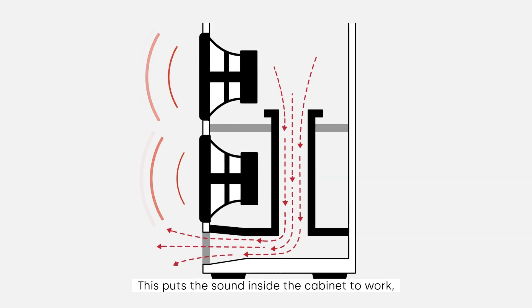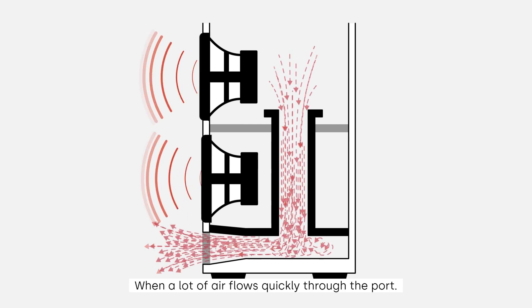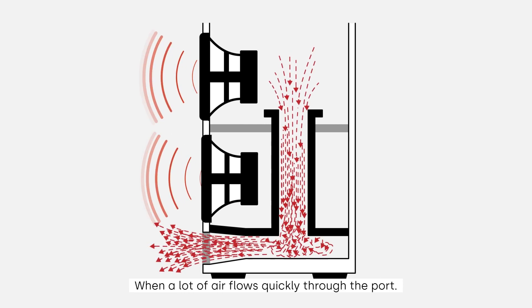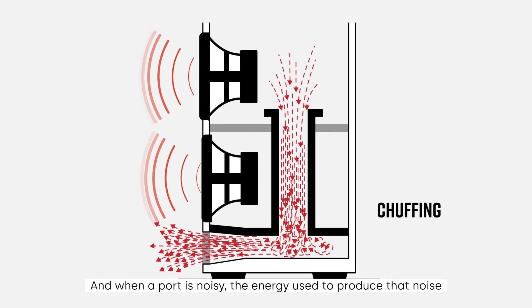This puts the sound inside the cabinet to work, helping to deliver louder, clearer bass. When a lot of air flows quickly through the port, that airflow can abruptly change, causing chuffing sounds and other distortion.